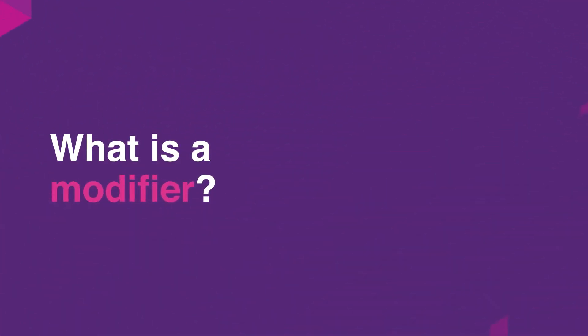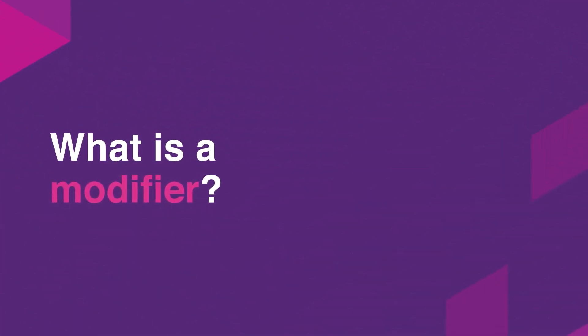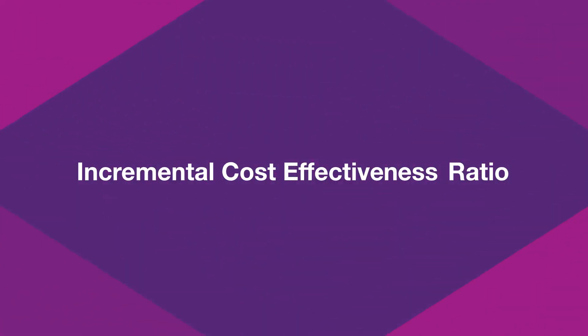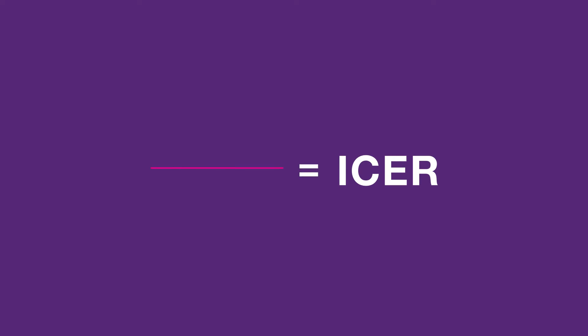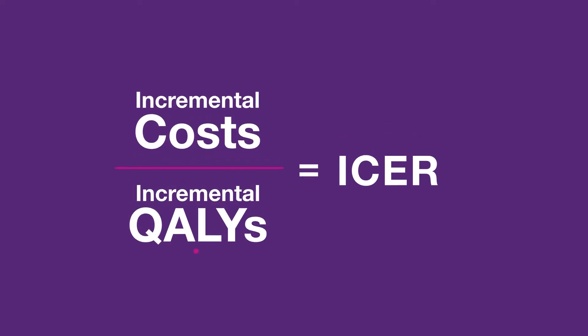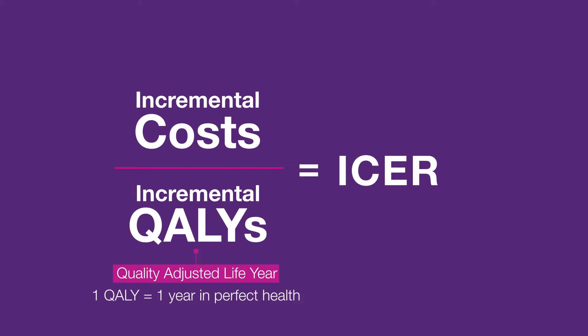How does NICE make a decision and what is a modifier? The main thing NICE focuses on when making a decision is the incremental cost-effectiveness ratio, or ICER. The ICER estimates how much a medicine costs to provide one QALY, or quality-adjusted life year, which is one additional year in perfect health. NICE will usually decide a medicine is value for money for the NHS if it costs between £20,000 and £30,000 per QALY.